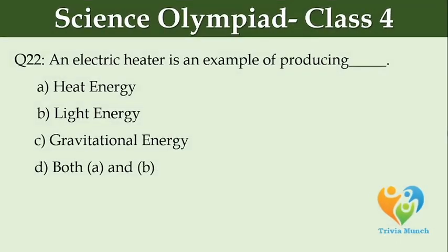An electric heater is an example of producing blank: Option A: heat energy, Option B: light energy, Option C: gravitational energy, Option D: both A and B.